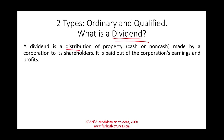A dividend is a distribution of property — usually cash, or it could be non-cash — made by a corporation to a shareholder. The assumption is always that dividend is paid out of earnings and profit. That means the company generates revenues, then they incur expenses, then they have a profit.